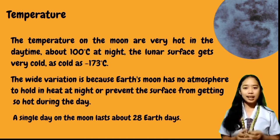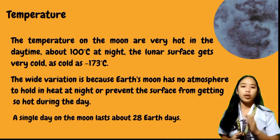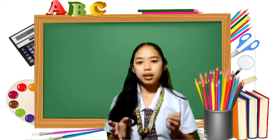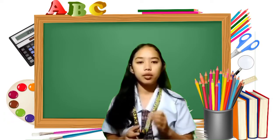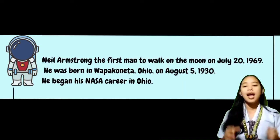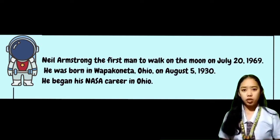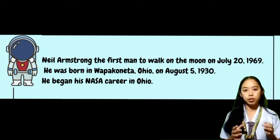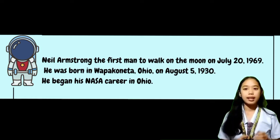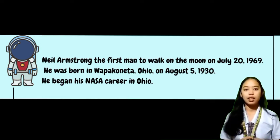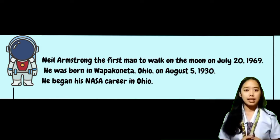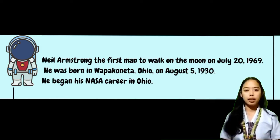A single day on the Moon lasts about 28 Earth days, meaning the lunar daytime is nearly two Earth weeks long. Neil Armstrong was the first man to walk on the Moon on July 20, 1969. He was born in Wapakoneta, Ohio on August 5, 1930, and he began his NASA career in Ohio.